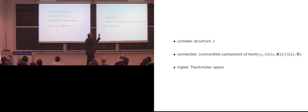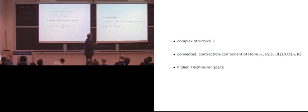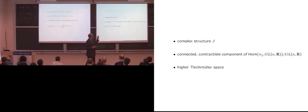In complex structure J, what you find is a connected, contractible component of the space of equivalence classes of homomorphisms into GLN(R). You learn something about the moduli space of representations into GLN(R) by looking at fixed points of this involution in complex structure I. This is a higher Teichmüller space: when N equals 2 (or for SL2), this is basically Teichmüller space — the representations into SL2(R) which uniformize a surface.